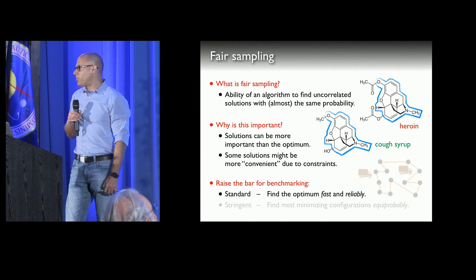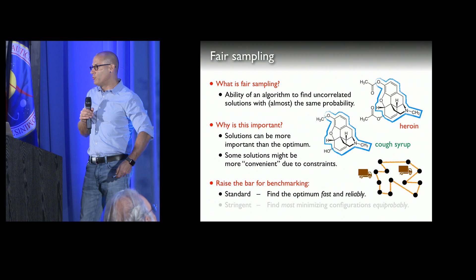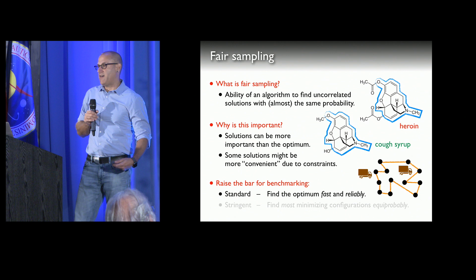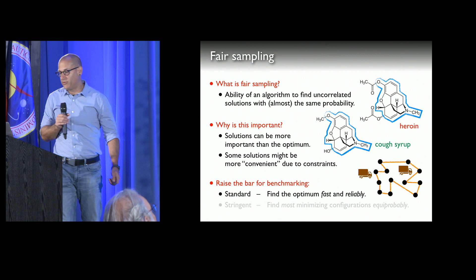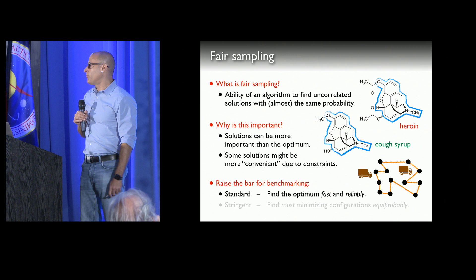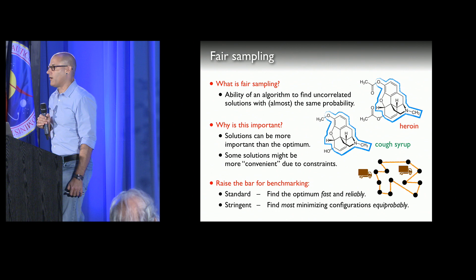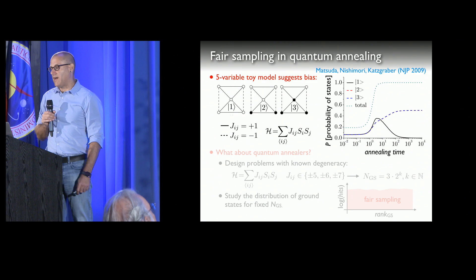Usually when you put constraints into optimization it makes your life very difficult. One thing you can do is solve a problem and then try to include the constraints later. A simple example: if you have a traveling salesman problem and can find many solutions that are perfect or almost perfect for your route, you can later factor in where the trucks are parked — saving a lot of effort. From a simple optimization point of view, finding most if not all solutions is a really hard thing to do.